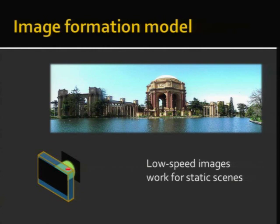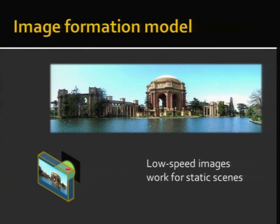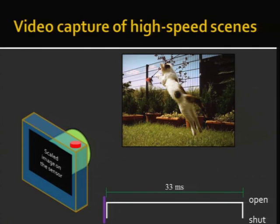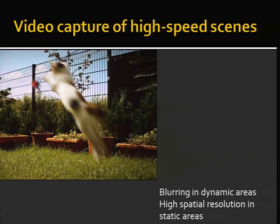What we did is we are interested in taking a high-speed video, but only using a low-speed camera. When I have motion in my scene, especially fast motion — here I have a cat jumping at a toy — I open my shutter, it stays open for my exposure time, and in areas where there's a lot of motion, I get a blurry picture.